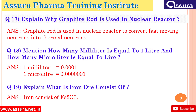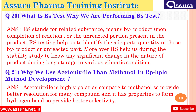How many milliliters are equal to one liter? One milliliter equals 0.001 liters. What does iron ore consist of? Iron ore consists of Fe₂O₃.